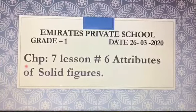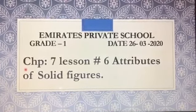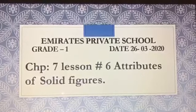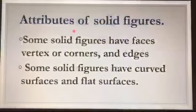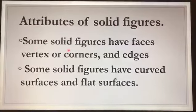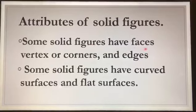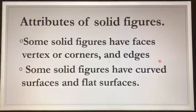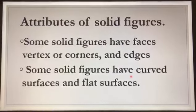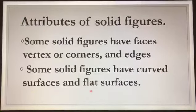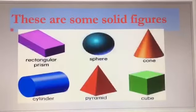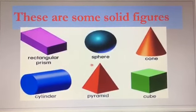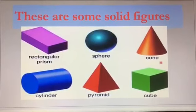Good morning my lovely students. Today we will do chapter number seven, lesson six: attributes of solid figures. Some solid figures have faces, vertex or corners, and edges. Some solid figures have curved surfaces and flat surfaces. Let's see some of the solid figures: rectangular prism, sphere, cone.